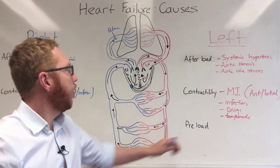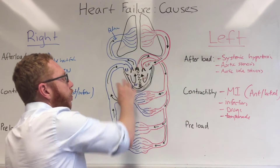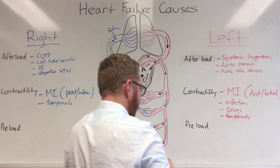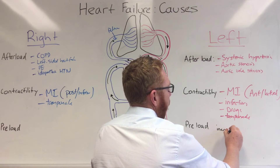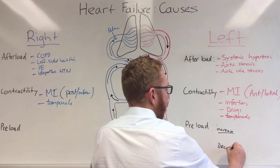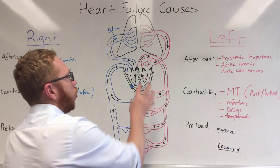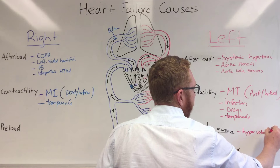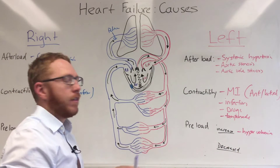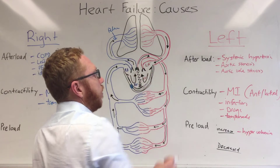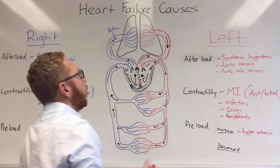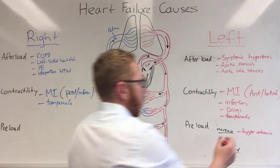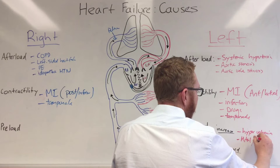Finally, preload causes: this is where too much or not enough fluid is coming back into the ventricles causing them to fail. On the left side, we can have increased preload — too much fluid. This could be hypervolemia, such as IV fluid overload. If the valves leading into the left ventricle are leaking — regurgitation — specifically mitral and aortic regurgitation, that also causes an increased preload.